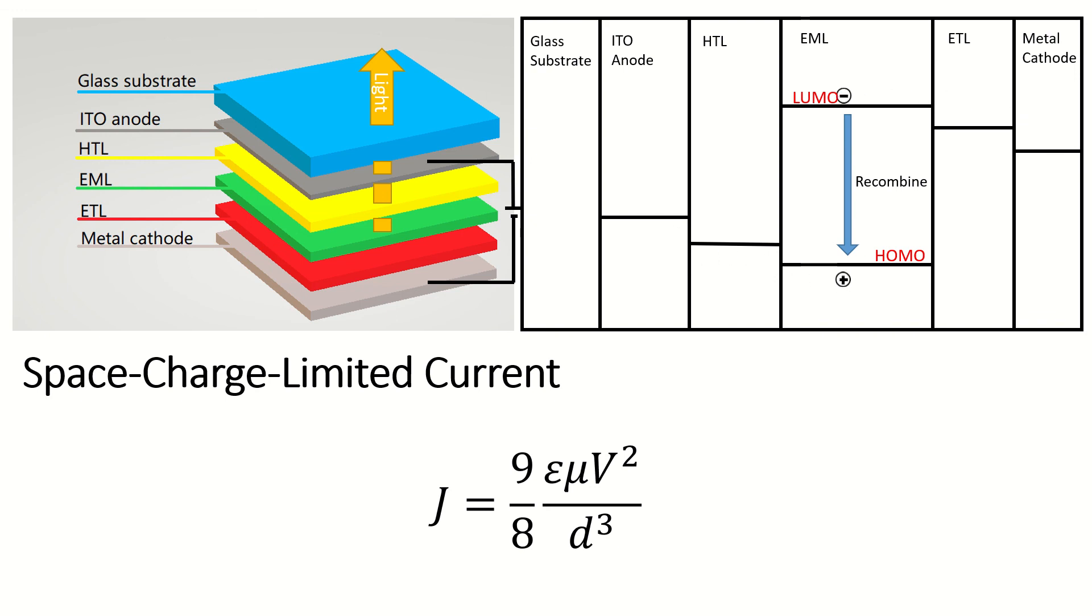It means that now the current is only dependent on the mobility and no longer on the charge density. Since in the device there is a strong electric field, the drift current is much stronger than the diffusion current. So we can neglect the diffusion current and find that the current transported is only related to the mobility here.